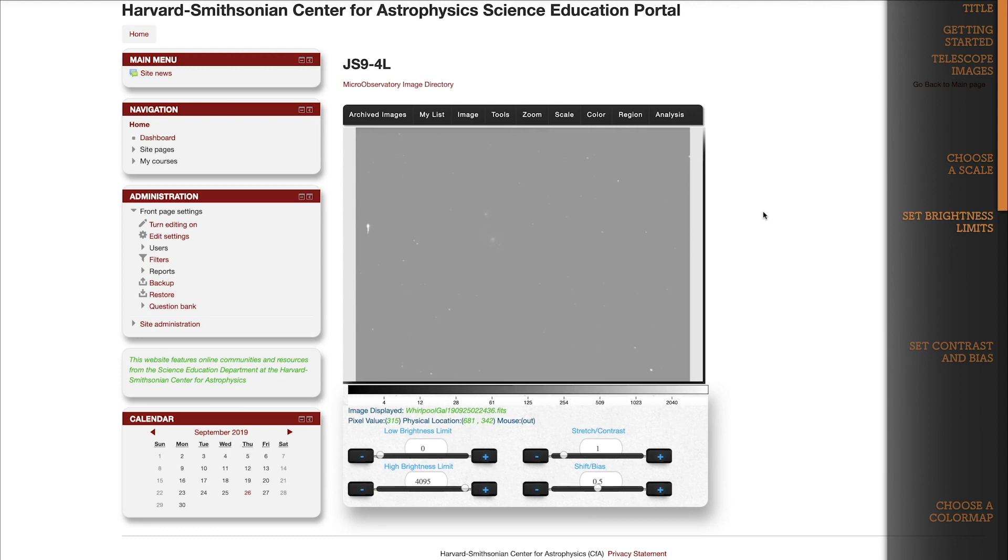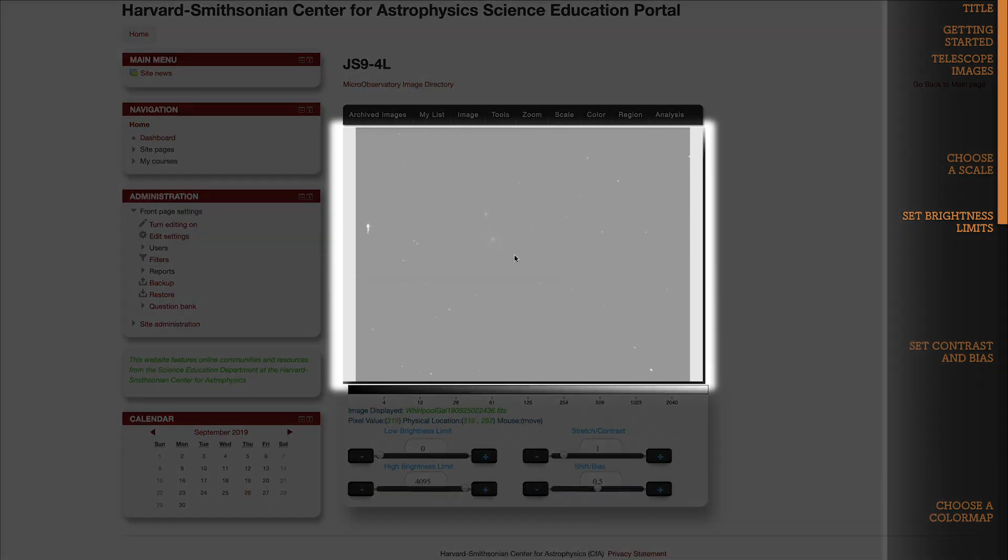The next issue is that we changed the coloration of the dark background sky as well. We would like the darkest parts where there aren't any stars to be absolute black, but everything has turned gray in our image. Why'd this happen? Well, when I move my mouse across the background sky, you'll see that the pixel values are all around 315 or 320. But the lowest brightness value available on our color scale is zero. The highest brightness value available on our color scale is 4095.